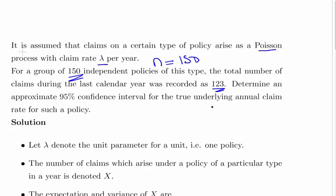Determine an approximate 95% confidence interval, so the approximate, I'll just come back to that shortly, it's sort of an approximation that you might have to justify. Determine an approximate 95% confidence interval for the true underlying claim rate for such a policy.